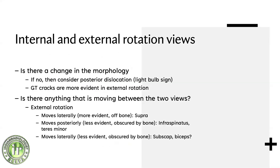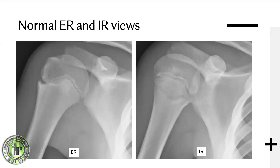Internal and external rotation views are very important. In every trauma series you'll typically get an AP internal and external rotation view along with a Y view - that's the standard trauma sequence. You're looking for changes in morphology of the humeral head; if there's no change, that's when you think about a light bulb sign. External rotation views show the greater tuberosity better, which is useful for greater tuberosity fractures, and seeing what moves between the two views helps identify structures.